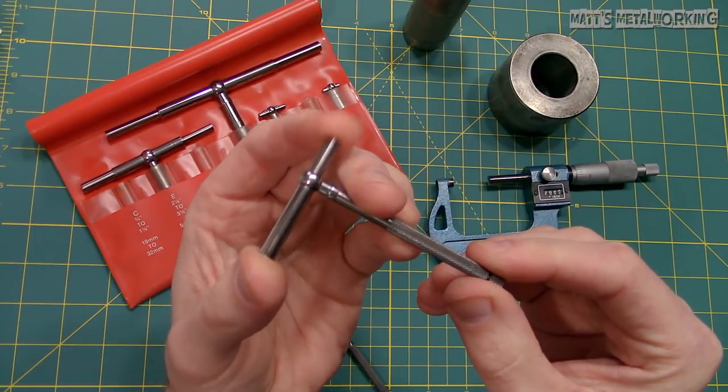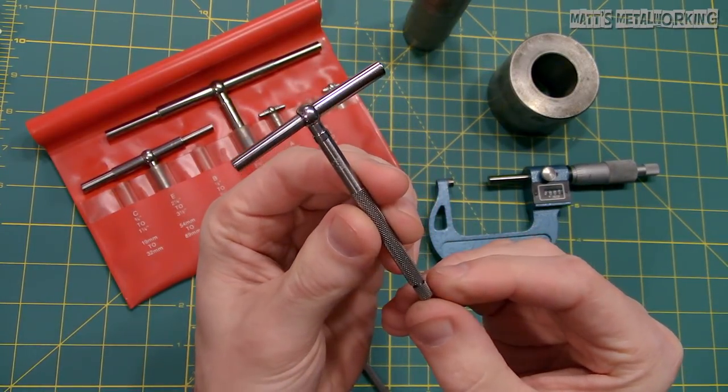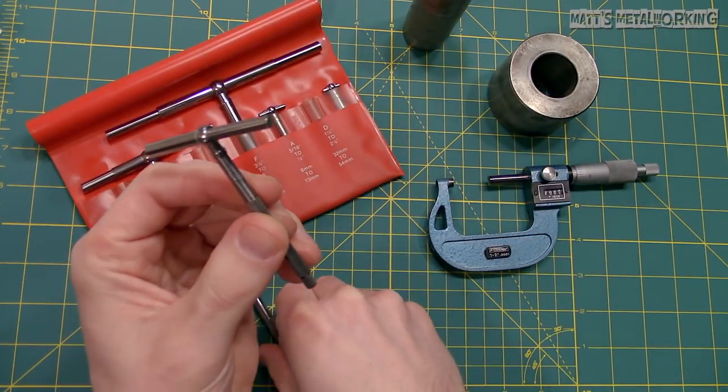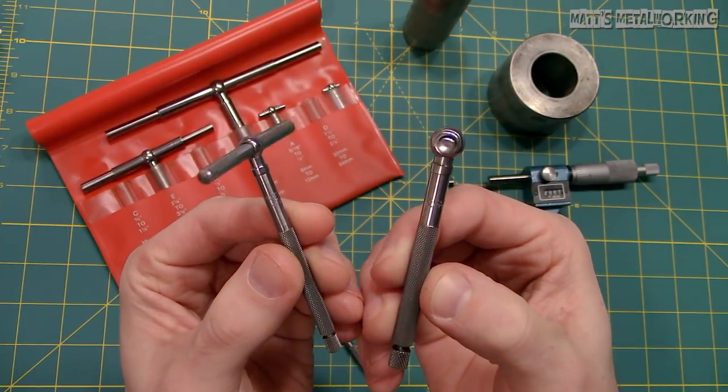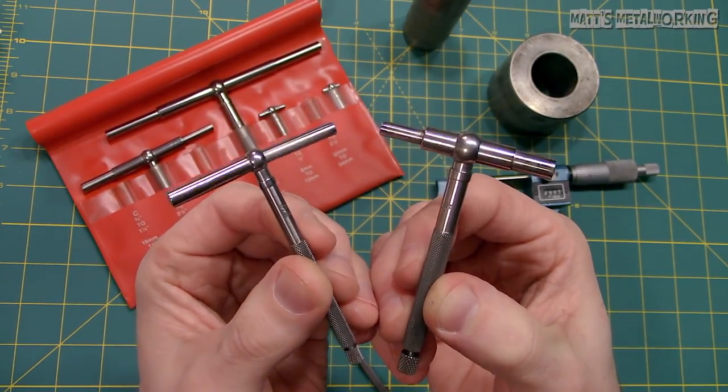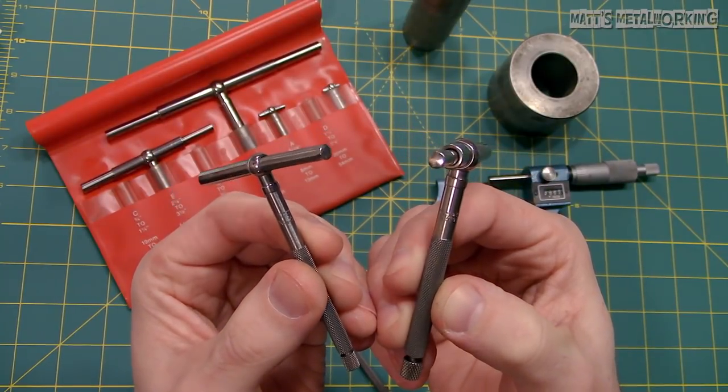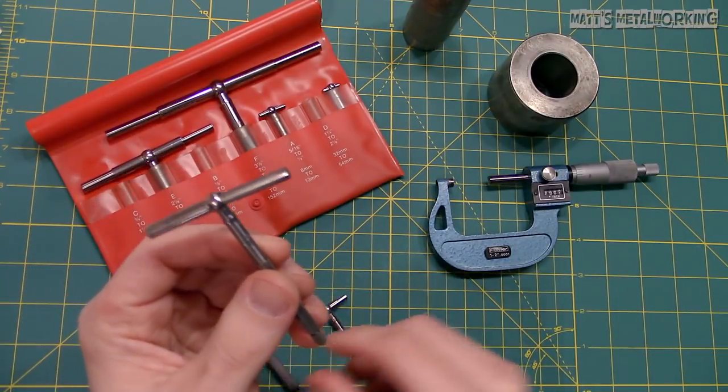As you can see I do have a full kit here so not one gauge fits all size bores. The smallest I have is 5/16 to 1/2 inch or 8 millimeter to 13 millimeter and the largest I have is 3.5 inches to 6 inches or 89 millimeters to 152 millimeters. This kit is made by Starrett.